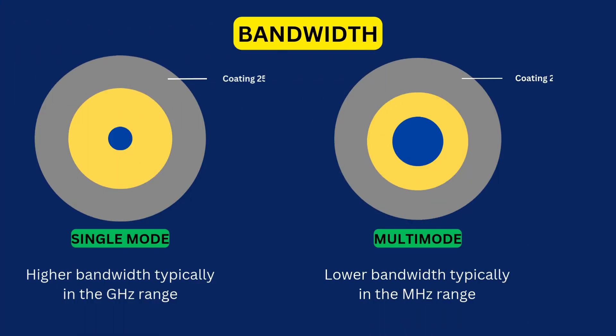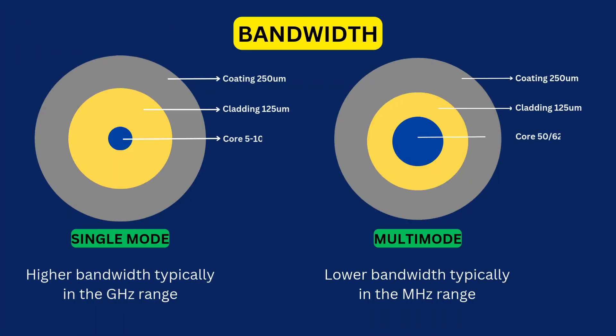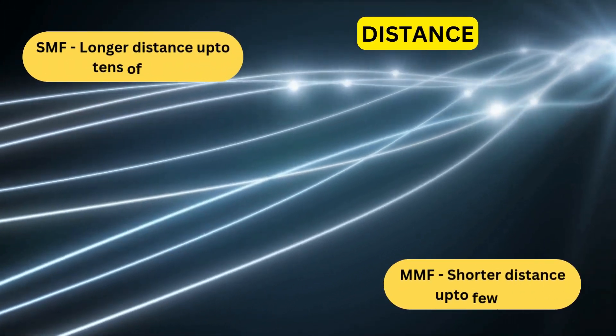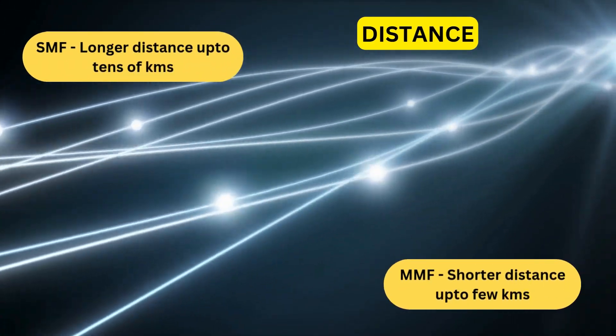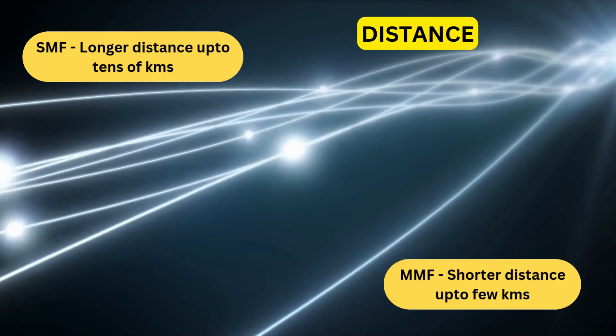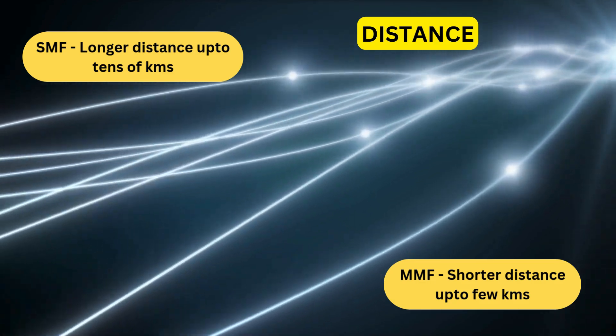Single-mode has higher bandwidth, whereas multi-mode has lower bandwidth. Single-mode can cover longer distances. On the other hand, multi-mode can cover shorter distances.